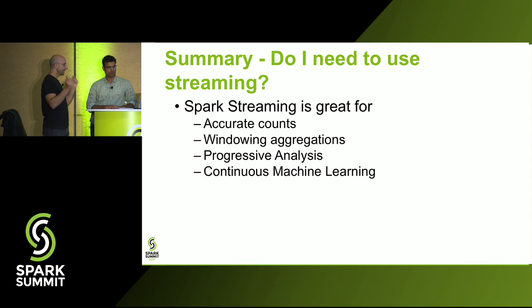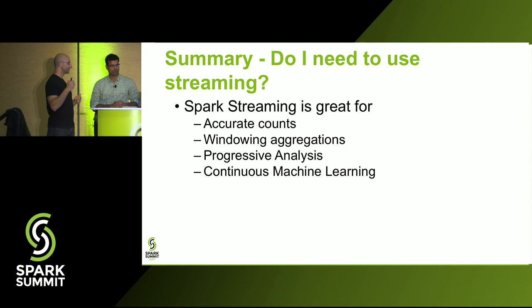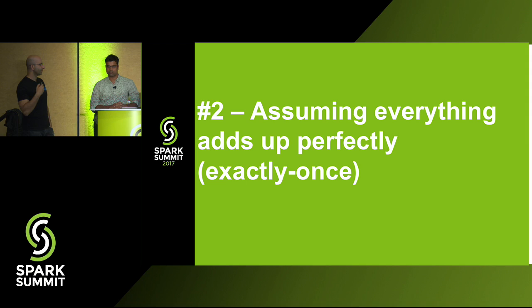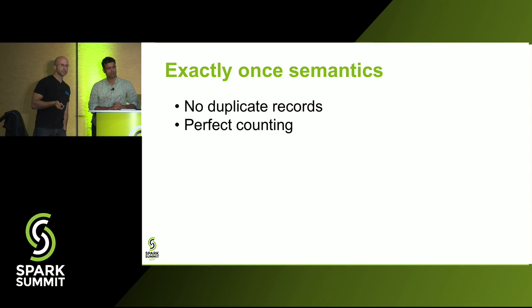When do we need streaming? Counting is your best use case. Windowing, progressive analytics, and progressive machine learning — like watching how centers move in k-means progressively — are also good fits. Now let's talk about counting specifically, as it's one of our primary reasons for a streaming architecture.